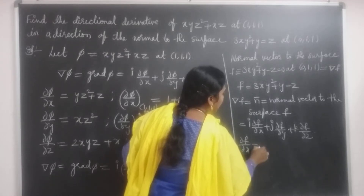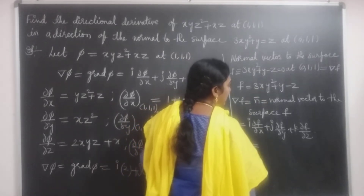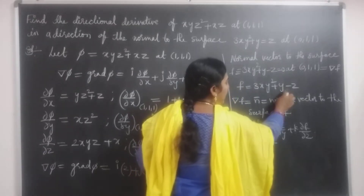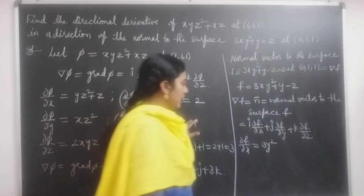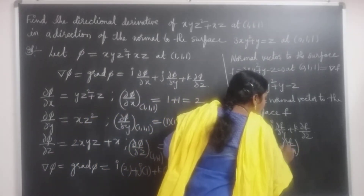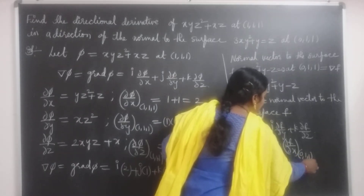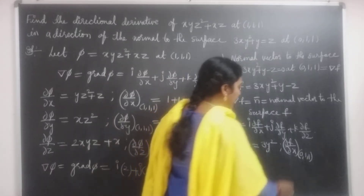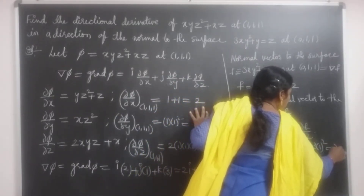Find the partial derivatives of f. For ∂f/∂x: x is the variable, y and z are treated as constants, so ∂f/∂x = 3y². At the point (0, 1, 1): y = 1, so ∂f/∂x = 3·1² = 3.